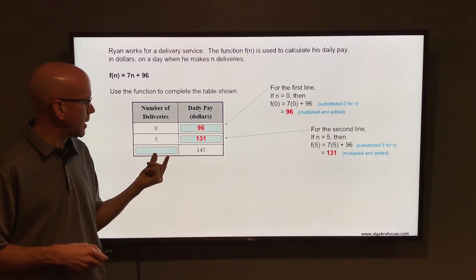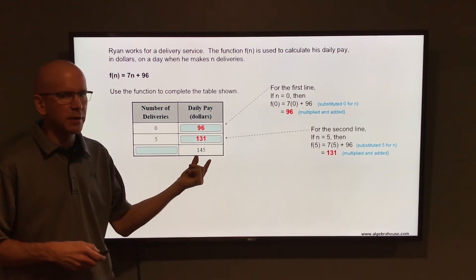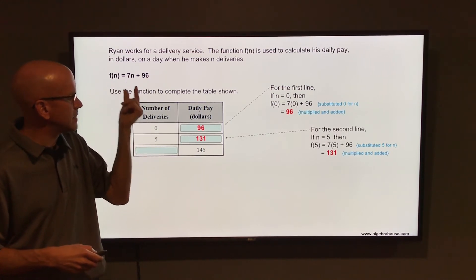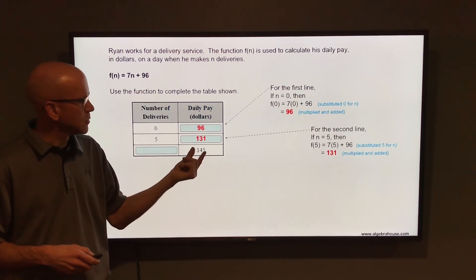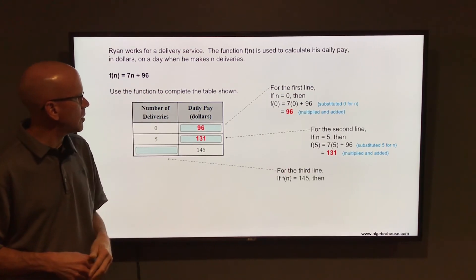And finally this last line, you don't know how many deliveries he makes, but you do know that he makes 145 dollars. Remember f(n) is the total money that he makes. So that 145 is going to go in for f(n) and you're going to solve for n.